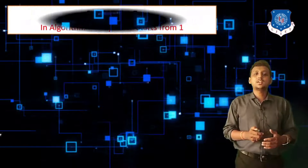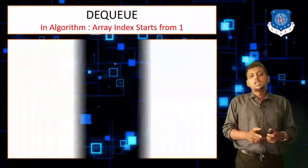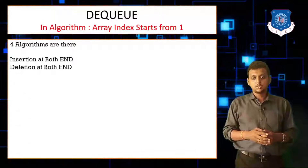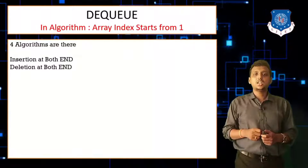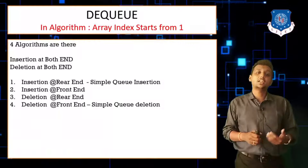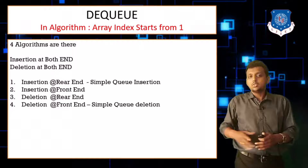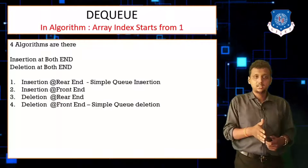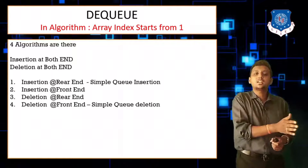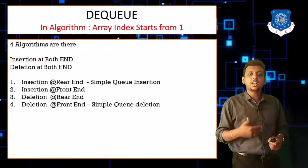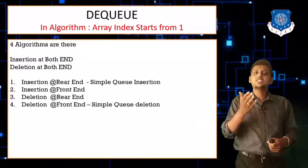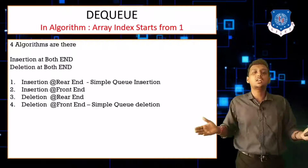Now let's move towards the algorithms. In DEQ you can perform four different algorithms: insertion and deletion at front end, and insertion and deletion at rear end. The insertion at rear end is totally similar to simple queue insertion. The different algorithm is insertion at front end. Similarly, deletion at front end is same as simple queue deletion, but deletion at the rear end is a bit different.